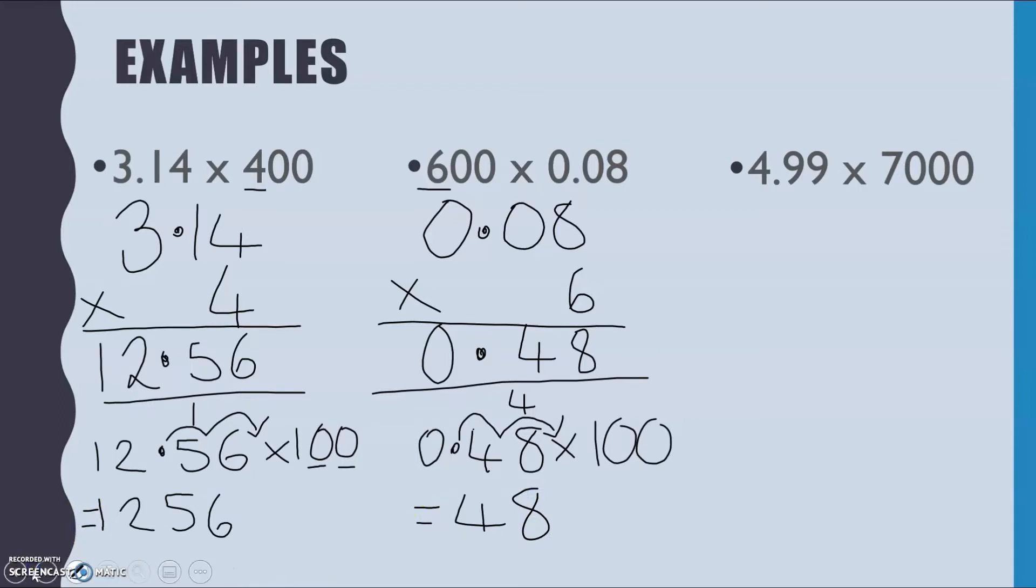And for the last example on this slide, we've got 4.99 times by 7,000. So same idea. We take that 4.99 first and we are going to times it by 7. Seven nines are 63. So put my 3 down, carry that 6. Seven nines again are going to be 63 plus that 6, it means 9 down and 6 carried. Line up my decimal points. Seven fours are 28 plus that 6 is going to be 34. So an answer of 34.93 so far.